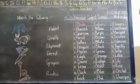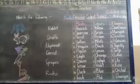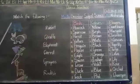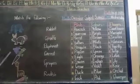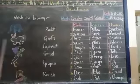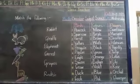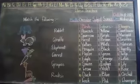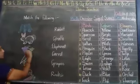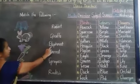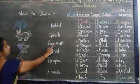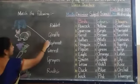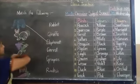Now we can revise the previous class topic by matching the pictures to the spellings. The first is elephant. Elephant spelling is E-L-E-P-H-A-N-T. Elephant. Let us match.